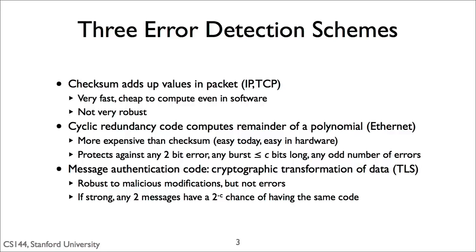The final algorithm is something called a message authentication code, or MAC. A message authentication code combines the packet with some secret information to generate a value. In theory, someone can only generate or check the MAC if they have the secret. So if you receive a packet and the MAC is correct, you're pretty sure the computer that generated the MAC has the secret. Unless I have the secret, it's amazingly difficult to generate the correct MAC for a packet. If you have a strong MAC algorithm, then given one packet and its MAC, I have zero information on what the MAC will look like if I flip a single bit. Message authentication codes are therefore robust to malicious modifications.